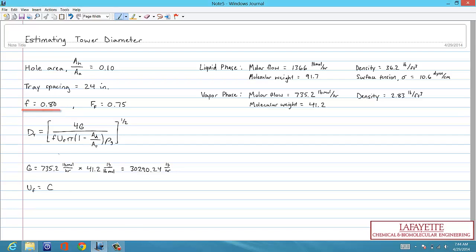U sub f is the flooding velocity, which can be found from the following equation. We can easily plug in the densities of the liquid and gas phases, but we need to solve for the capacity parameter c, which is equal to the product of four other parameters.